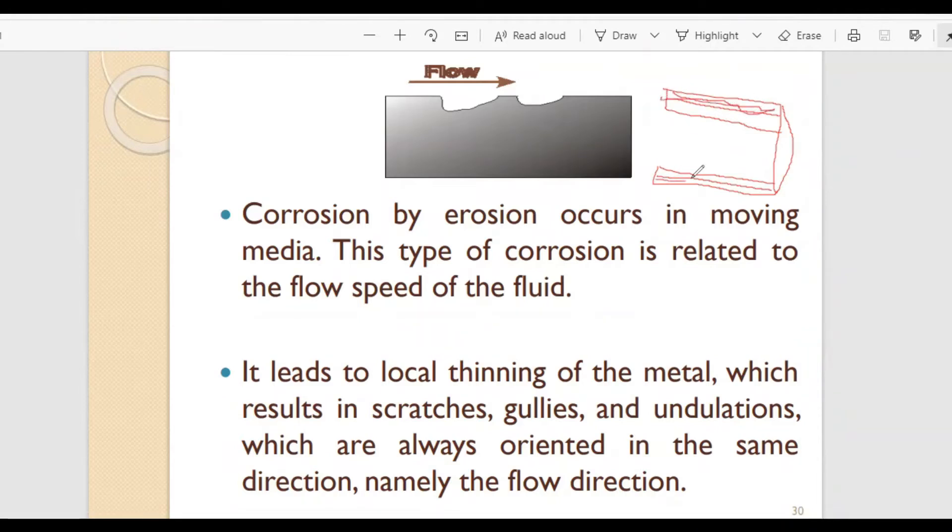It leads to local thinning of the metal, which results in scratches, gullies, and undulations on the surface of the metal, which are always oriented in the same direction, namely the flow direction. So if the flow is towards this region, the erosion is also in this region.